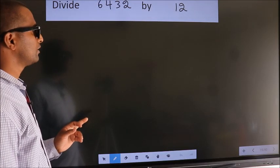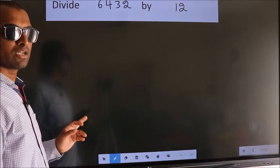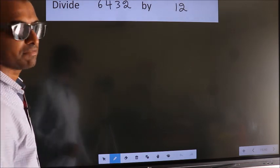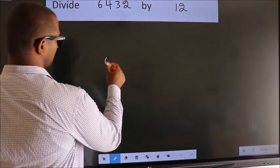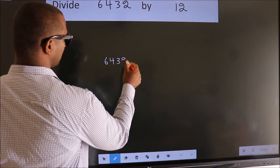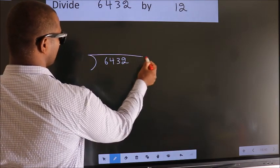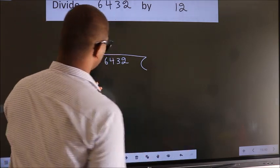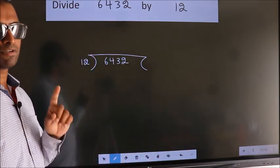Divide 6432 by 12. To do this division, we should frame it in this way: 6432 here, 12 here. This is your step 1.